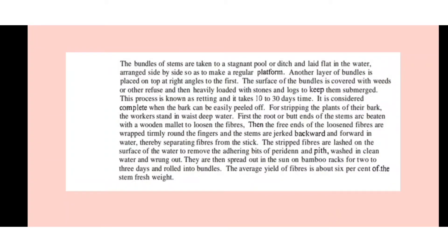The next step is stripping — the removal of fiber from the stock after completion of retting. Workers stand in waist-deep water, beat the root end of the stems with a wooden mallet to loosen the fiber, then grip the free ends tightly around the fingers and move the stems backward and forward in water to separate the fibers. The stripped fibers are laid on the surface of the water to remove adhering bits of pericarp and pith.